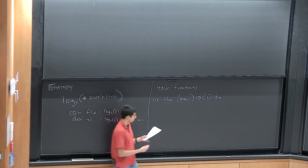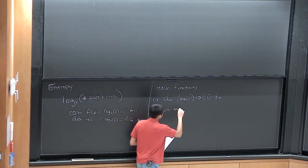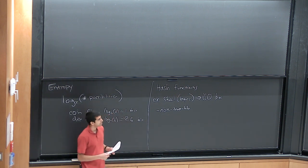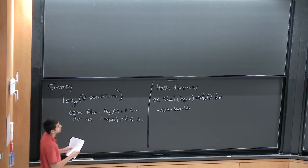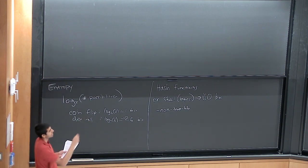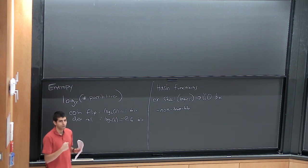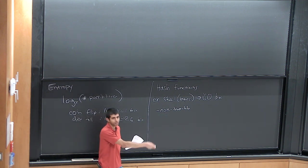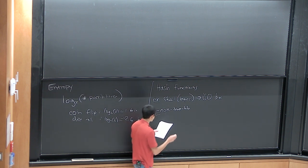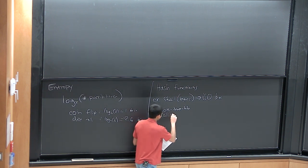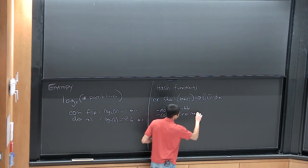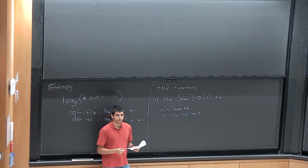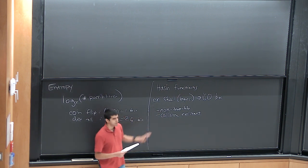Hash functions have a number of important properties. The first property cryptographic hash functions have is that they're non-invertible — if you take the output from this function, it's hard to figure out what input produced that output. You can go one way and compute the SHA-1 hash easily, but you can't go backwards. Another property is that they're collision resistant: it's hard to find two different inputs that produce the same output. This basically describes what a cryptographic hash function is.